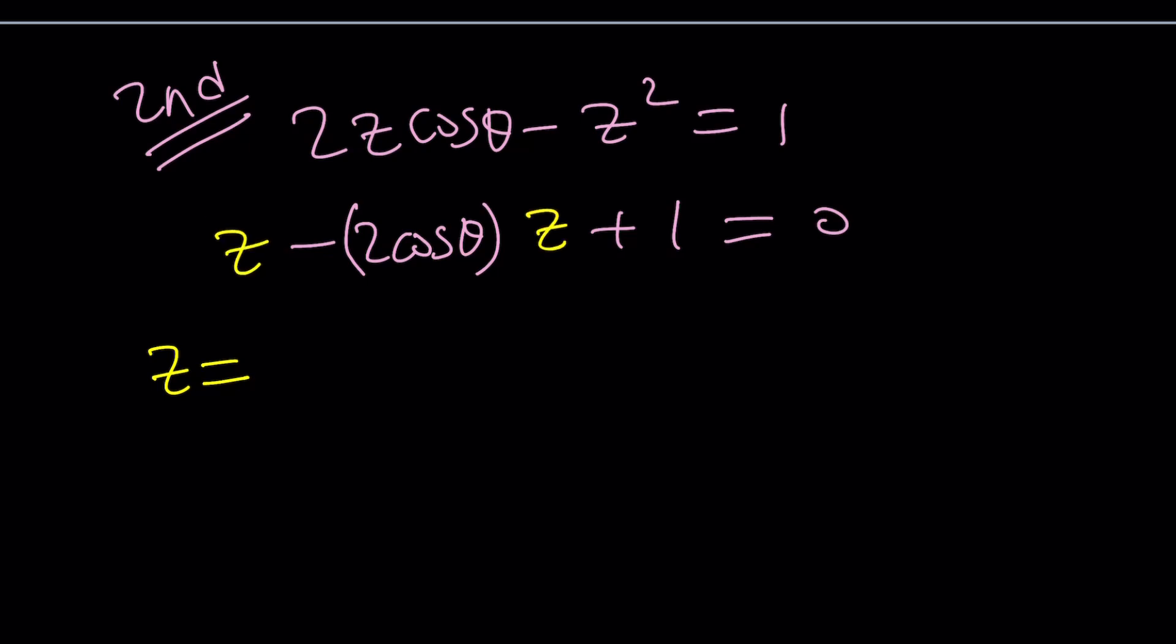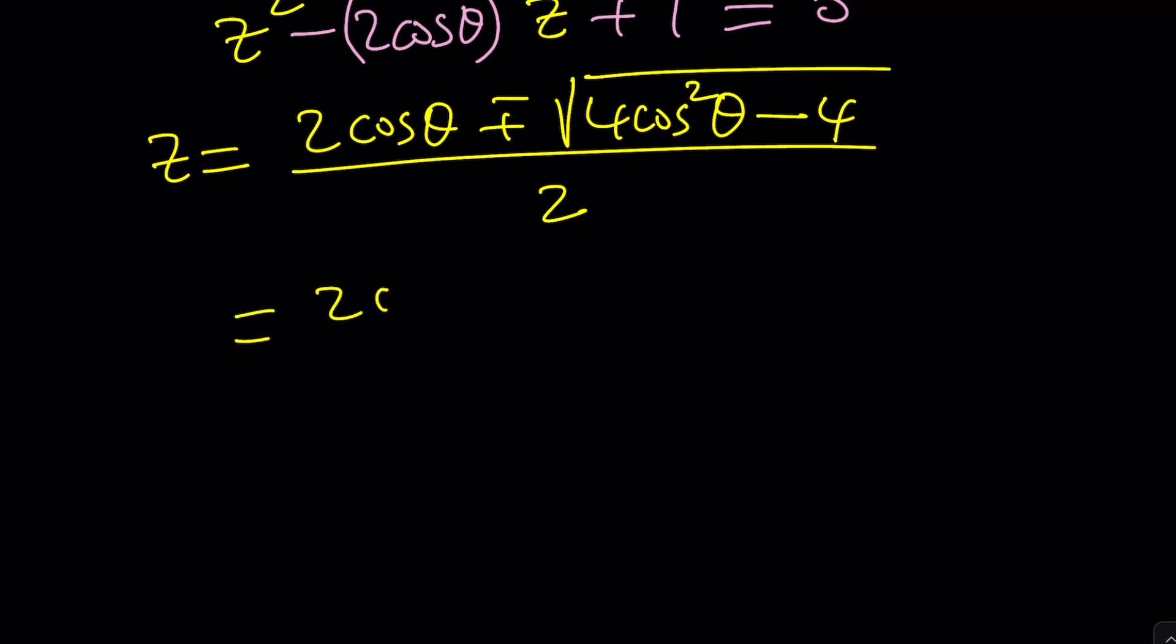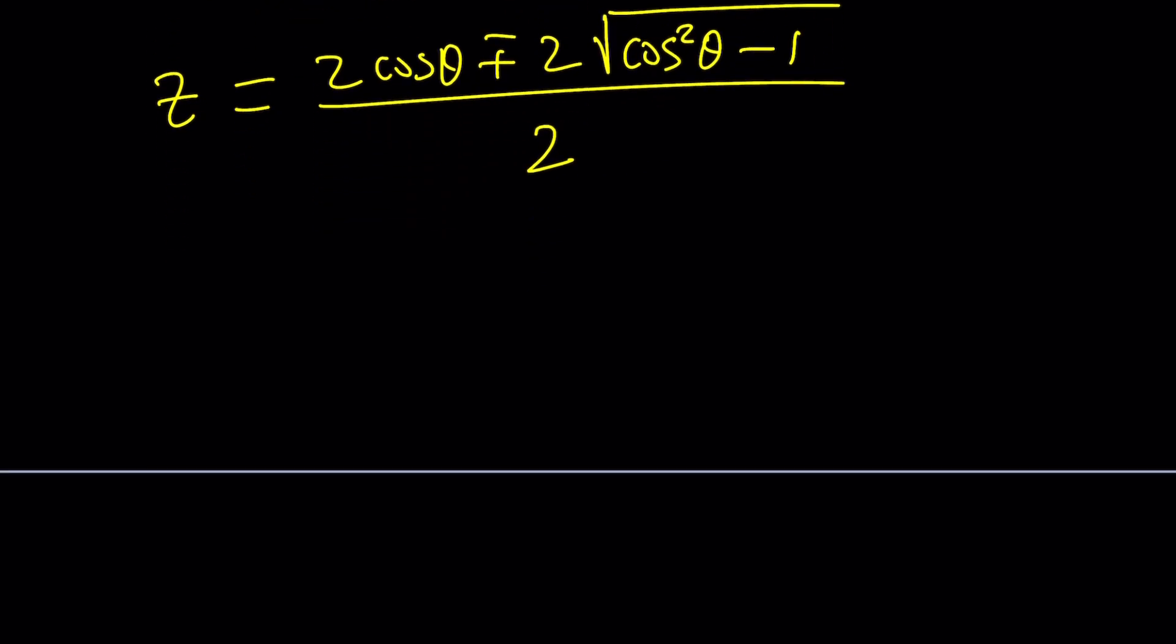Now notice that this equation is quadratic in z. And now negative b is 2 cosine θ plus minus the square root of b², which is 4 cosine² θ minus 4ac, which is minus 4, divided by 2a, which is 2. Awesome. Now we're going to do a little bit of work here to simplify this. We can pull out a 2, and inside we're going to have cosine² θ minus 1, which is pretty interesting. And then we can divide everything by 2.